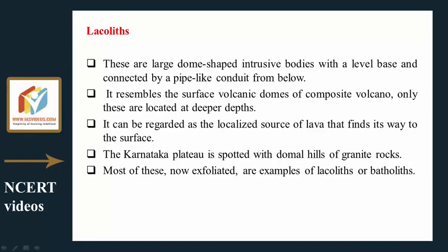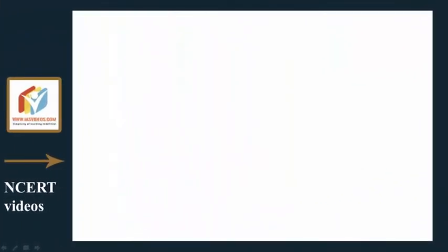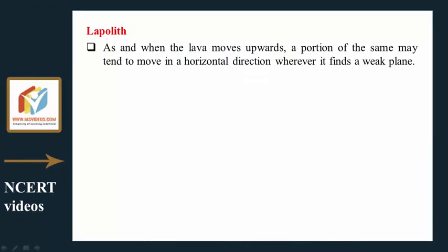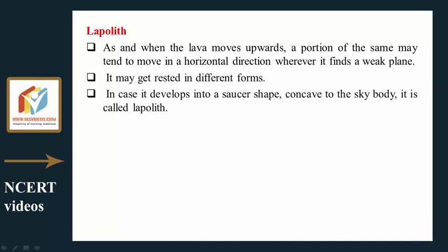Lopoliths: As and when lava moves upward, a portion may tend to move in a horizontal direction wherever it finds a weak plane, and may get rested in different forms. If it develops into a saucer-shaped, concave-to-the-sky body, it is called a lopolith.